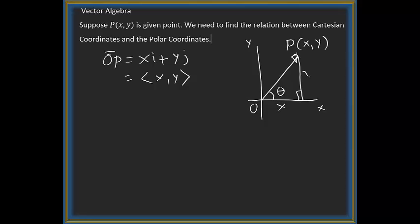This is your x length, this is your y length, and this is theta. The length of OP is r. We write this as the magnitude of the vector, which is r equals square root of x squared plus y squared using the Pythagorean theorem.